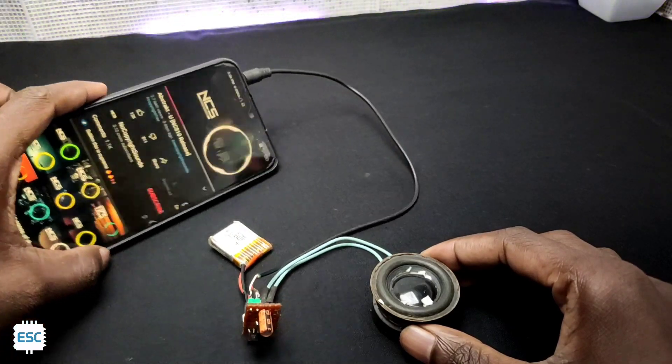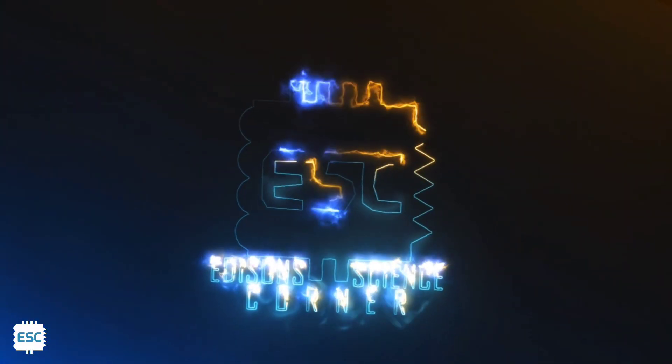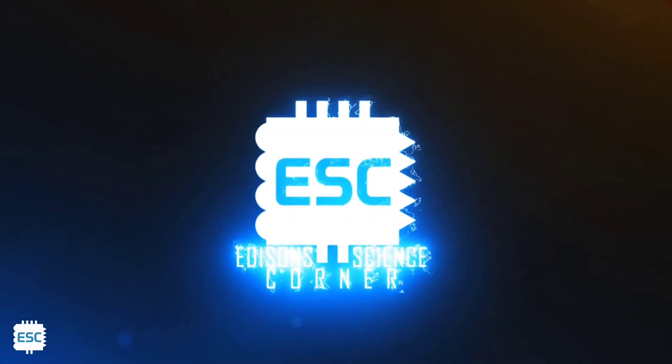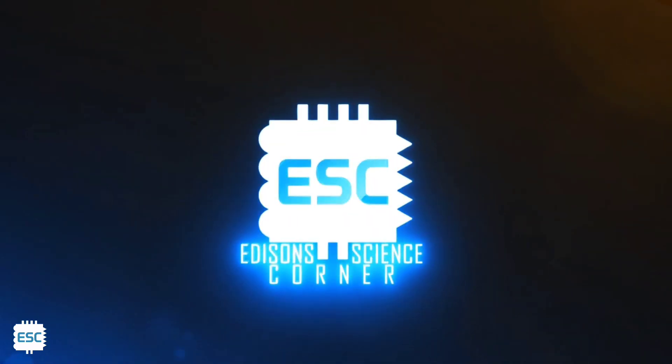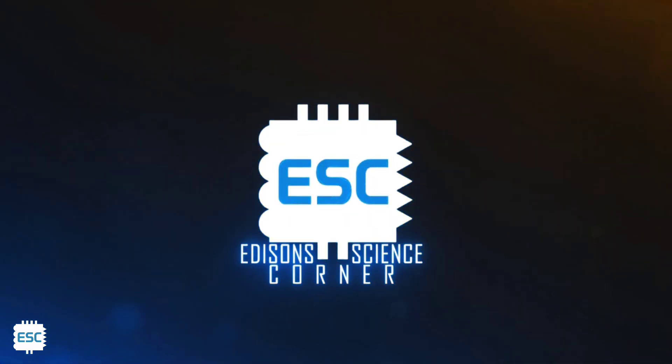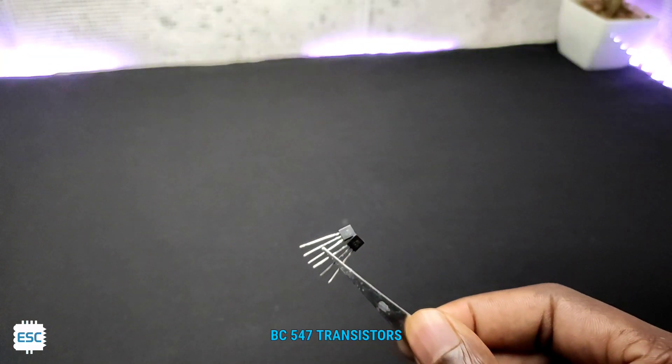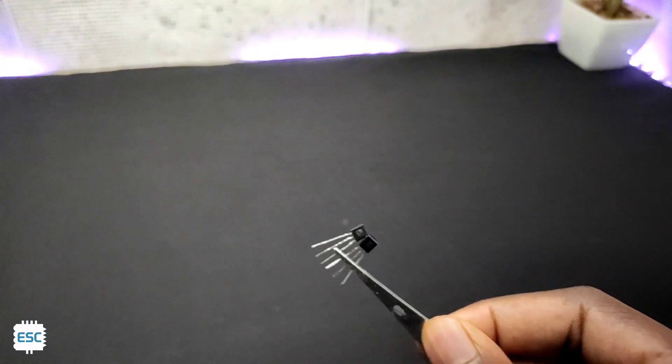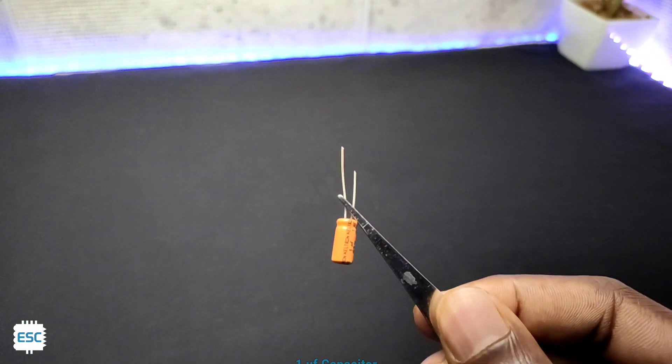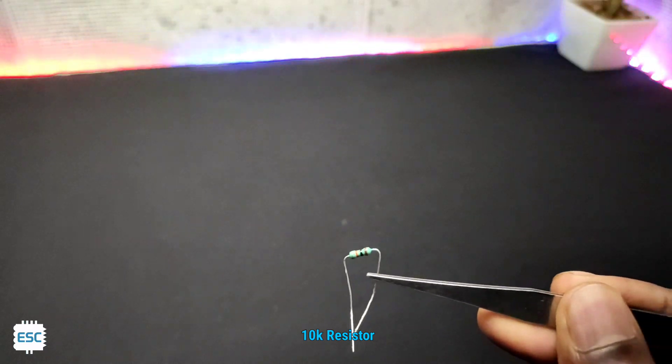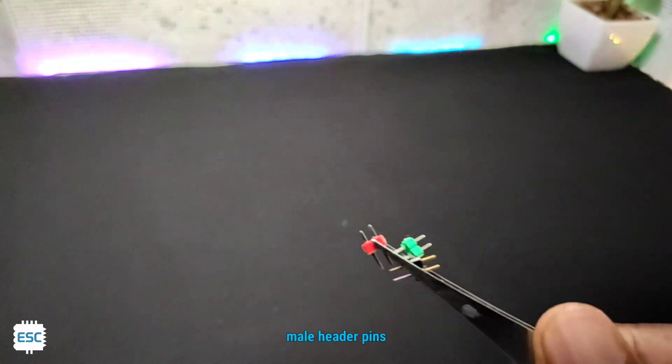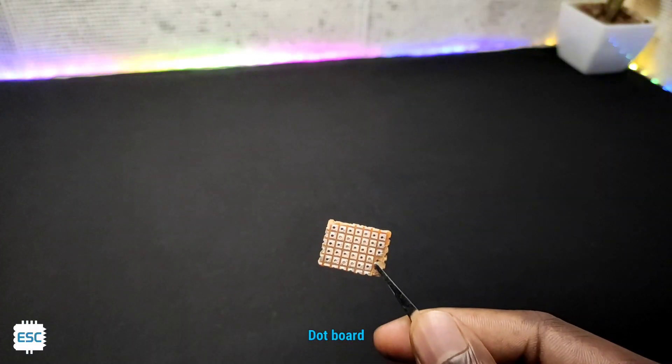For this we need two NPN transistors. Here I am using BC547, a 1mF capacitor, a 10k resistor, some male headers, and a small piece of perf board.